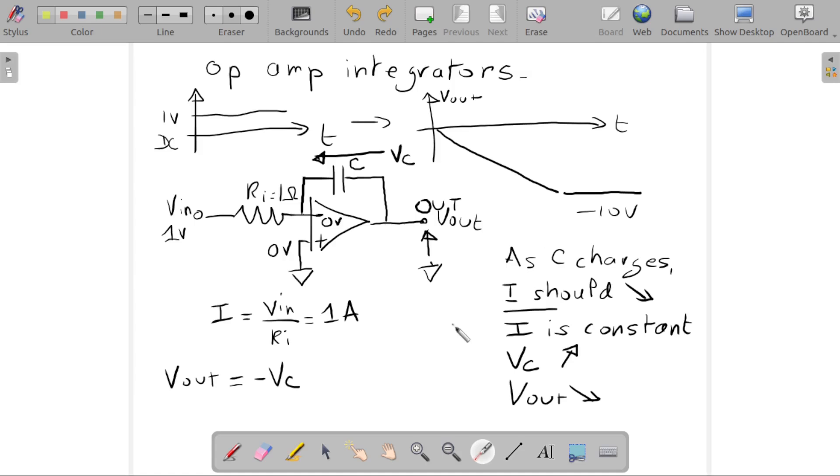The op amp does things at the output so that the current through Ri and C remains constant. It always has to increase Vc so that the current stays constant, and increasing Vc means decreasing Vout. This is going all the time—at one second, two seconds, three seconds. It's a continuous battle, and you end up with a linear ramp here. The voltage goes down in a linear fashion.